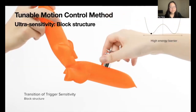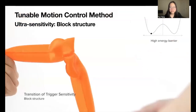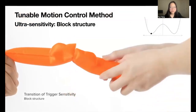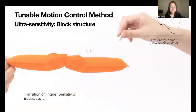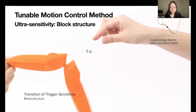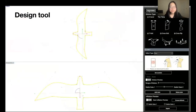If we add a block structure to the side of the airbag and block it in the middle of its two stable states, we can create an ultra-sensitive state where even a tiny force may trigger it to switch states.